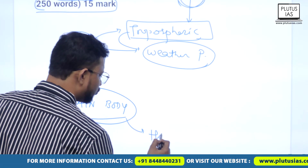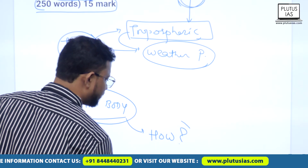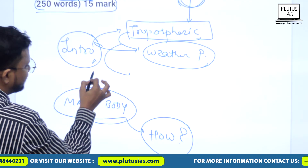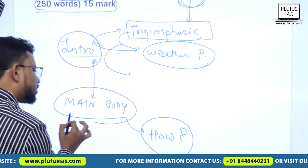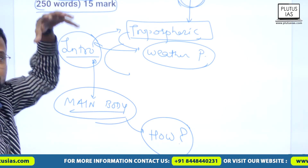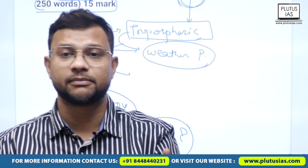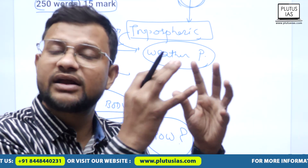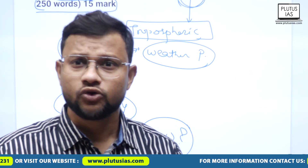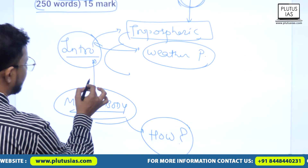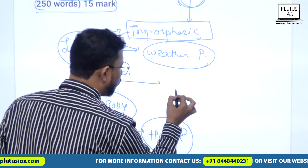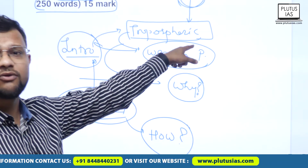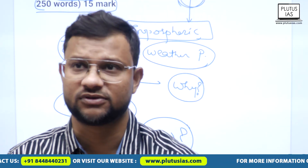In the main body you are supposed to write how — how the troposphere affects weather. There should always be a connection between introduction and main body. Your answer should look like an integrated answer, meaning every part is well interconnected with the other. So it's good to write why it influences the weather processes.